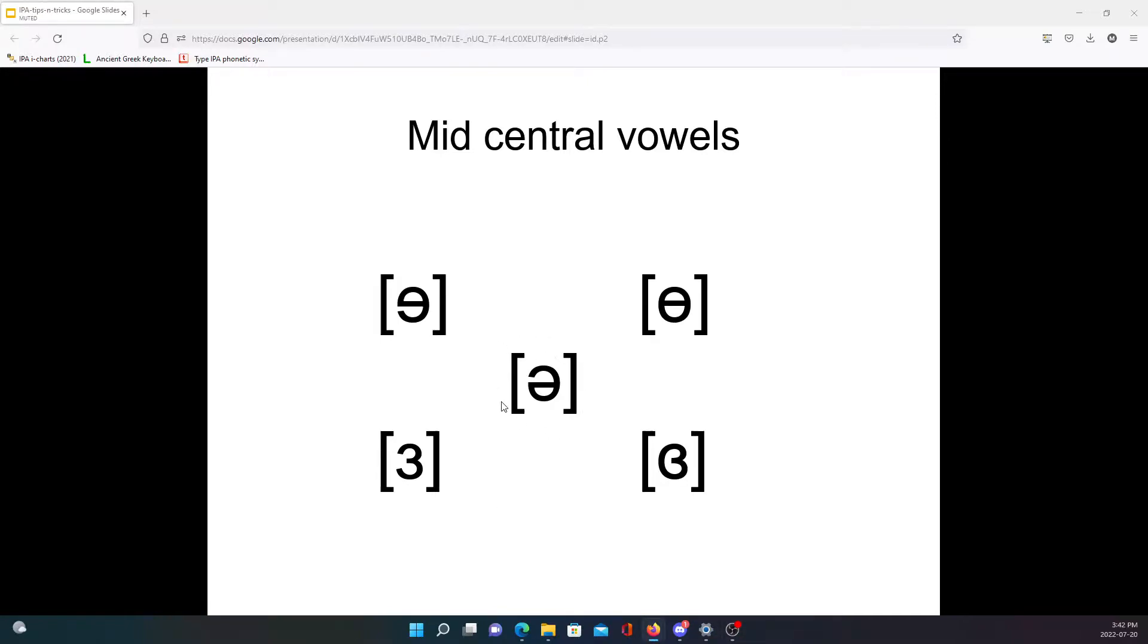First, we can deal with the schwa. That's the one right there in the middle, the turned e symbol, turned lowercase e. It's the vowel that's so common in unstressed syllables in English. This is the only vowel symbol that is fully mid, as opposed to close mid up above or open mid down below, and it's one that you're probably familiar with if you learned introductory linguistics or introductory phonetics around English.